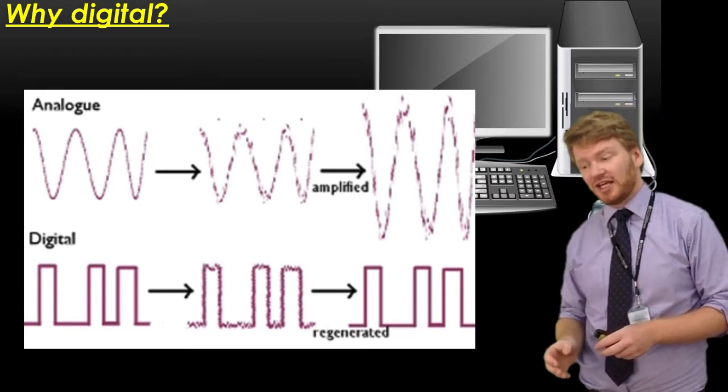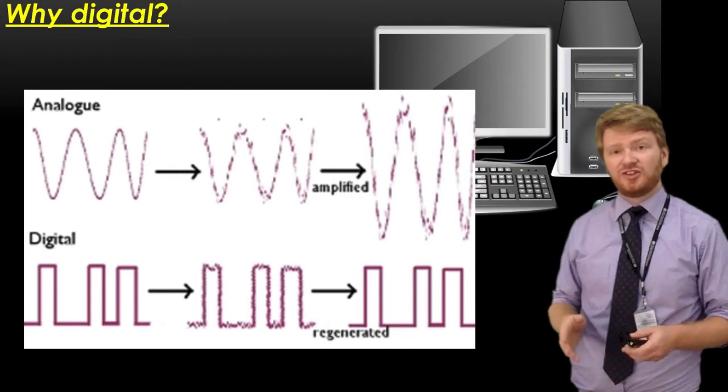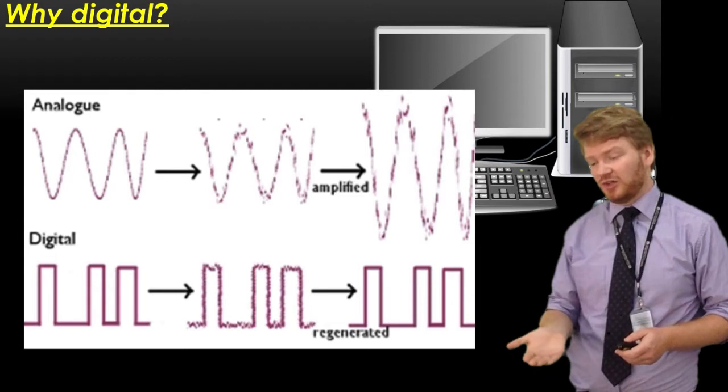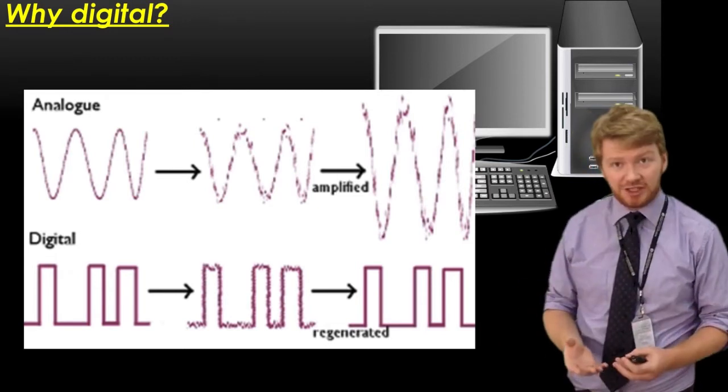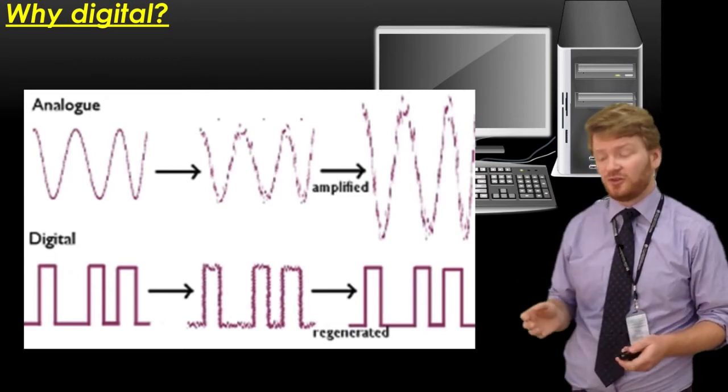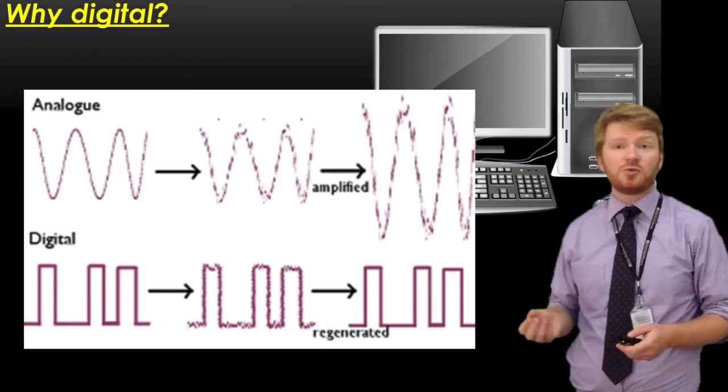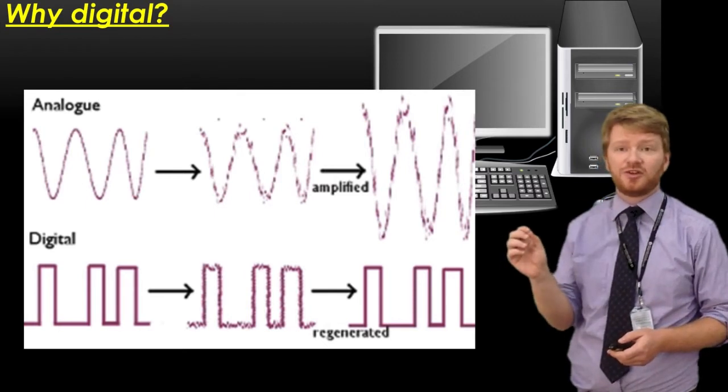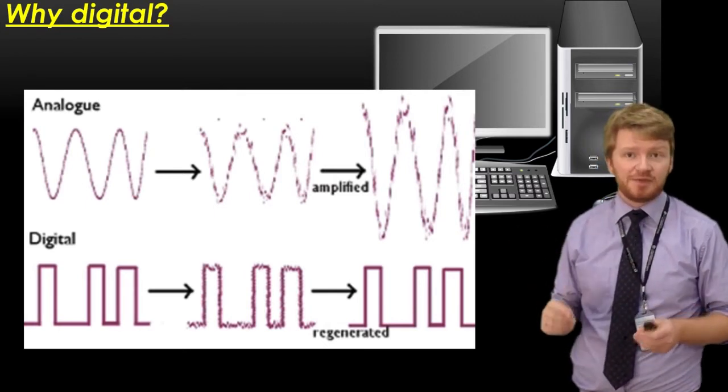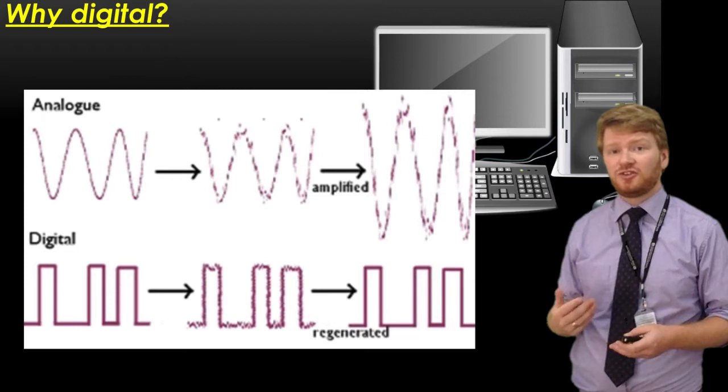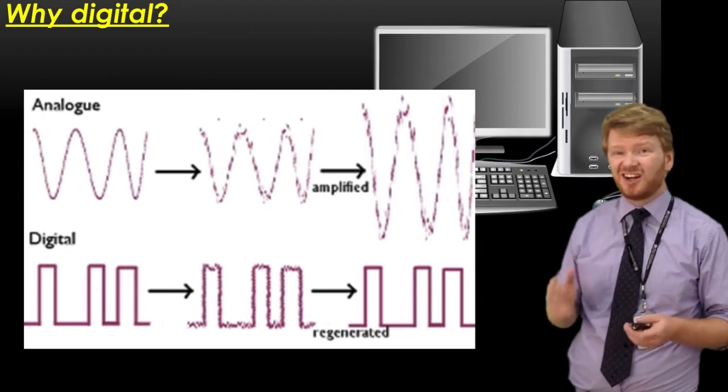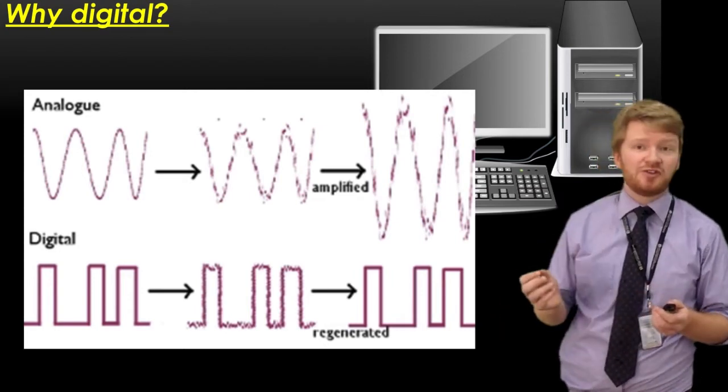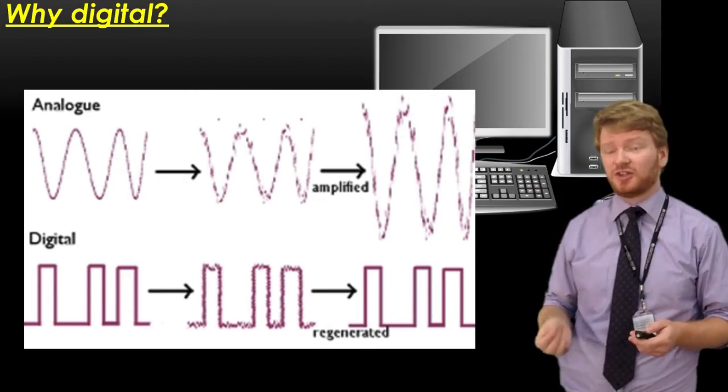Digital, on the other hand - when I add noise to my digital signal, I can still easily see when it's supposed to be high and when it's supposed to be low. So I can regenerate it. That's why if you're watching Astro and it starts to rain, you either have perfect picture quality or it cuts out entirely. Up until that point you get perfect signal because the computer can work out what the signal is supposed to be.